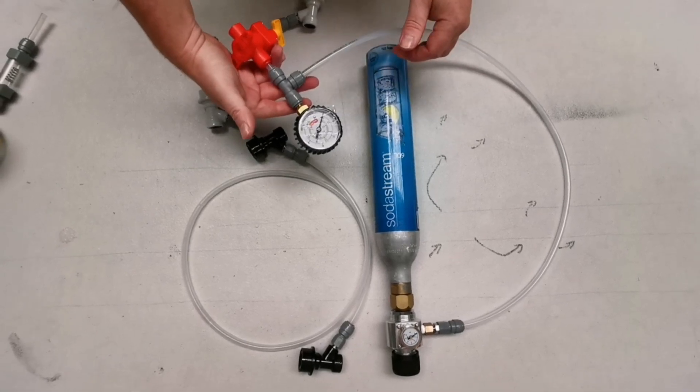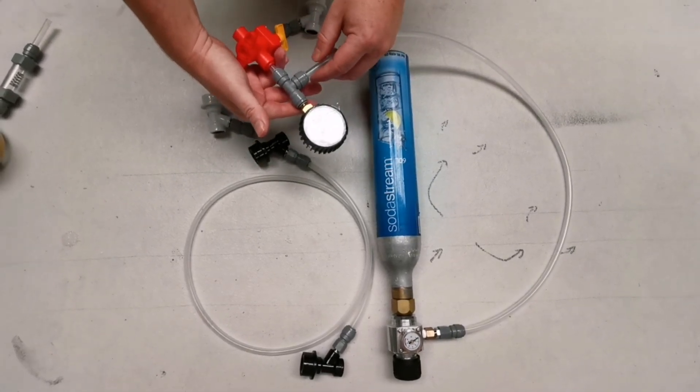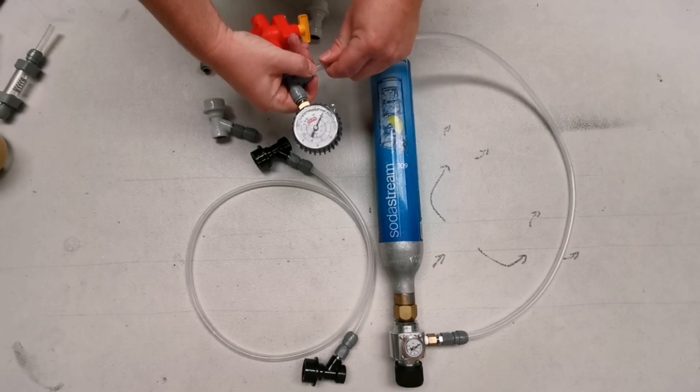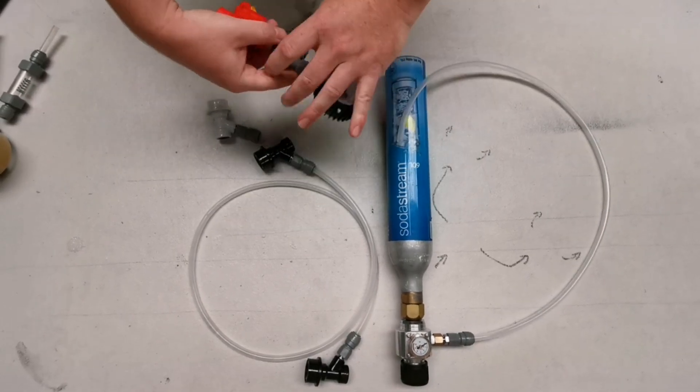Once we have that pressure set, we need to remove the gauge which will get damaged by liquid going through it and just keep the adjustable valve.